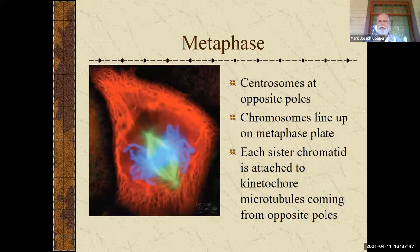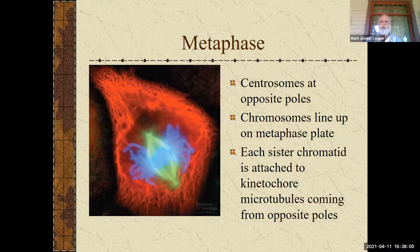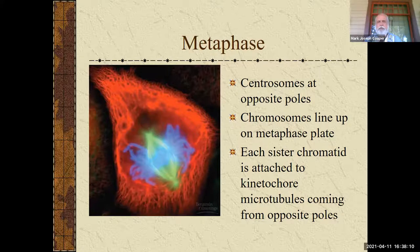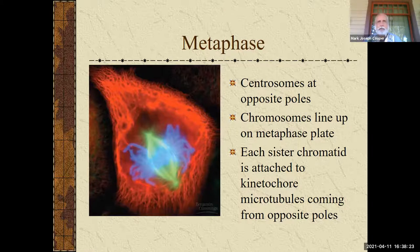The next phase is metaphase — 'meta' means middle. The centrosomes are now at opposite poles; centrosomes are centrioles with their asters. The chromosomes line up on the metaphase plate, which is an imaginary line right in the middle between the two centrosomes. Each sister chromatid is attached to kinetochore microtubules coming from opposite poles. The goal is to build this structure so that when the microtubules shorten, the chromosomes can be pulled apart.